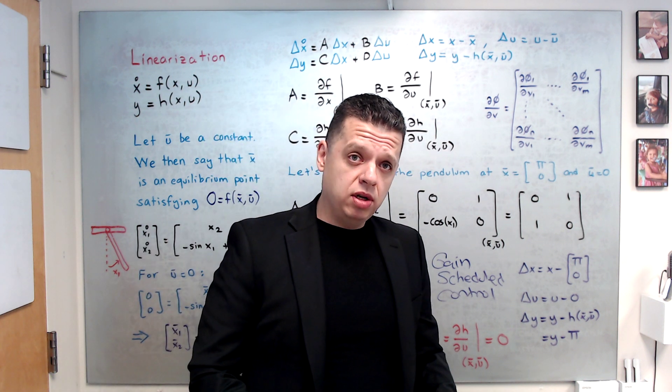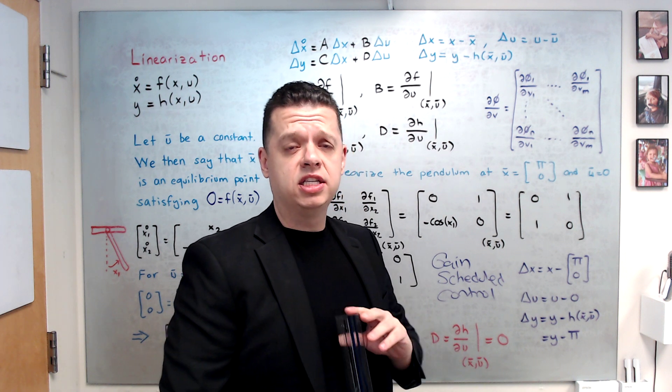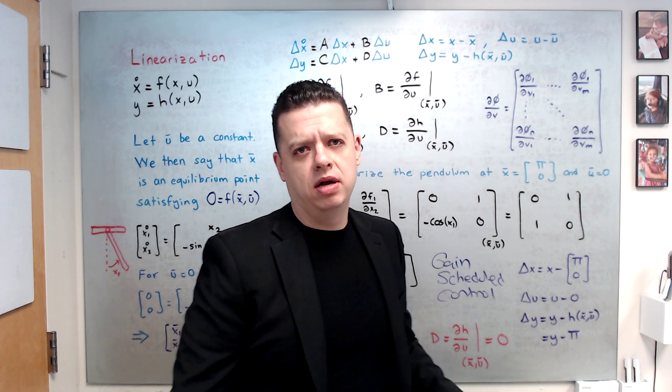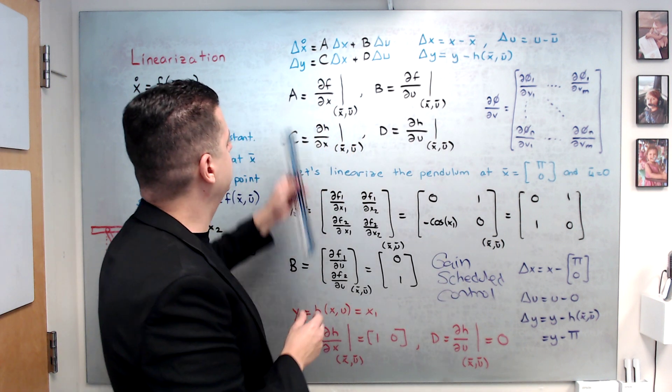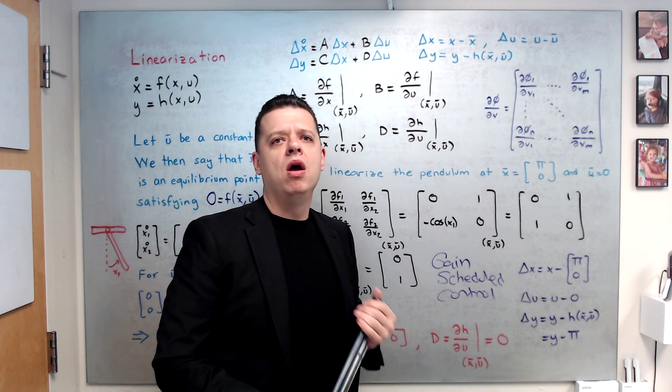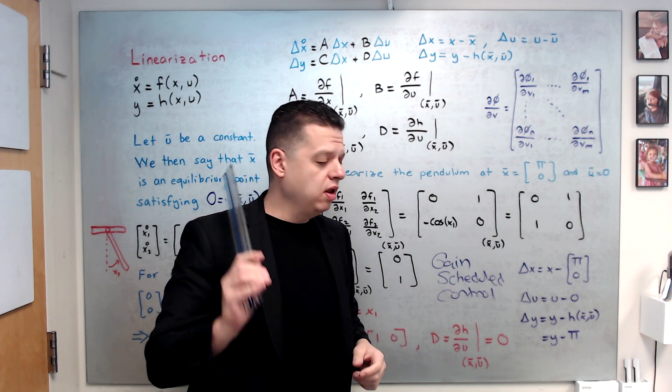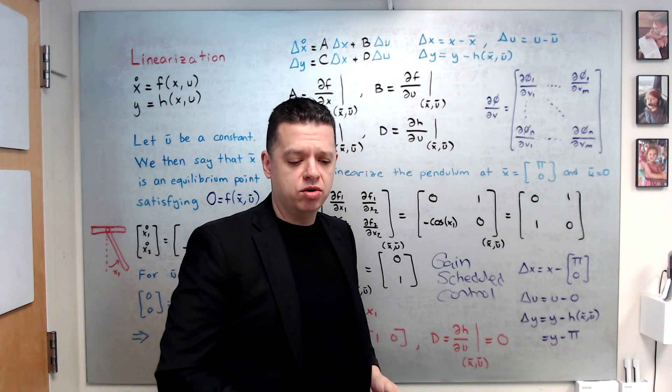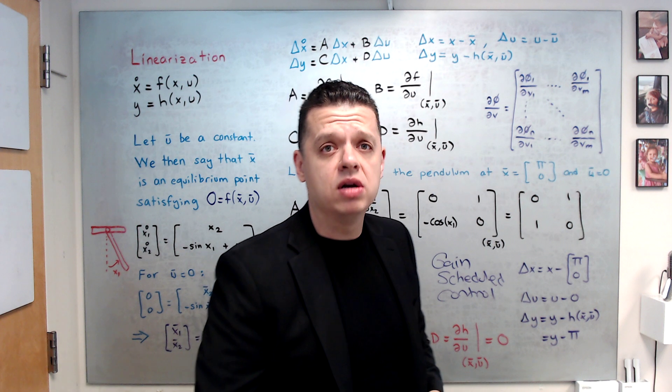I am going to write here Gain Scheduled Control. Watch this Gain Scheduled Control video that will teach you how to control a system in multiple equilibrium points. If you want to control a system on one equilibrium point, however, you can just take these A, B, C, D matrices, design your controller, and go from there. All right. I hope you find this video helpful. Let me know if you want me to cover any other topics. Leave comments so we can go from there. Take care.